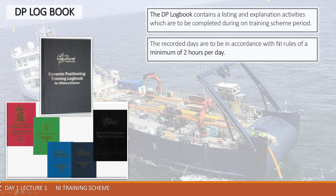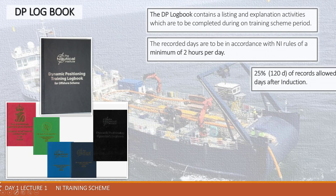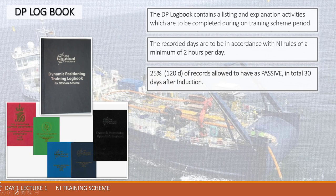After the induction course, trainees are allowed to make passive records. In total, you are allowed to make 25 percent of 120 days — that is, 30 days of records — which may be logged when the vessel is not actually operating on DP with running propulsion. So generally, a total of 30 days after the induction course may be recorded without the vessel actually being on DP, while you are on board your DP vessel.